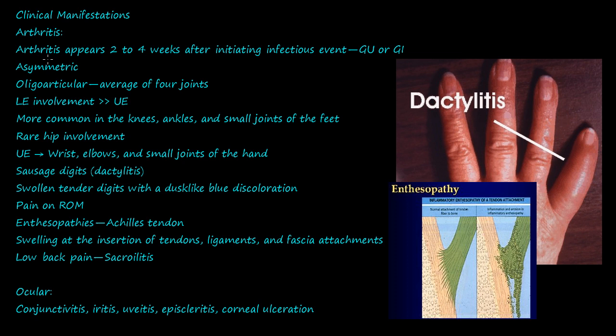Arthritis appears two to four weeks after the initial infectious agents, usually via genitourinary or gastrointestinal routes of infection. It's asymmetric — so one side is affected more than the other — which is interesting because we talked about symmetric bilateral sacroiliitis as a common feature of seronegative spondyloarthropathies. It's also oligoarticular, meaning an average of four joints or less.